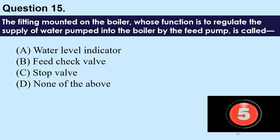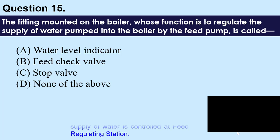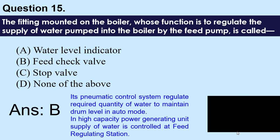Question number 15: The fitting mounted on the boiler whose function is to regulate the supply of water pumped into the boiler by the feed pump is called — A) water level indicator, B) feed check valve, C) stop valve, D) none of the above. The answer is B — feed check valve. Its pneumatic control system regulates the required quantity of water to maintain drum level in auto mode. In high-capacity power generating units, supply of water is controlled at the feed regulating station.